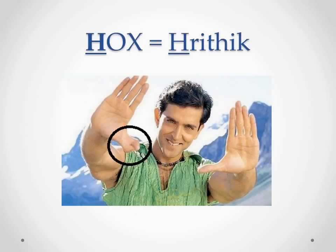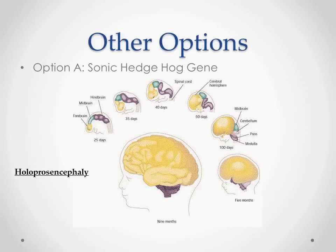An easy way to remember this — for our audience from India, Pakistan, Bangladesh, Nepal, and all other viewers across the world who follow Bollywood — is Hrithik Roshan, a very popular movie star who has six digits in his right hand. That's the photograph shown here. HOX starts with H and Hrithik also starts with H — so correlate that in your mind: HOX, Hrithik, H-H. Next time you see HOX written anywhere, first thing you think of is Hrithik.